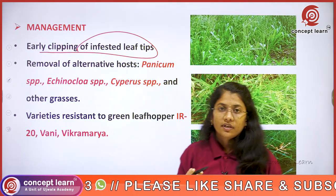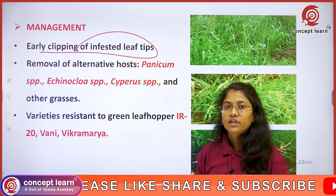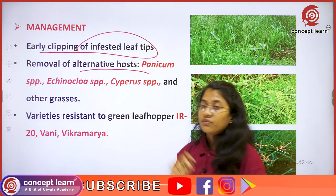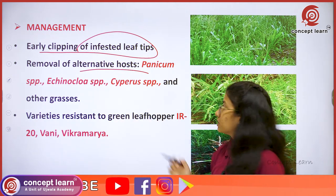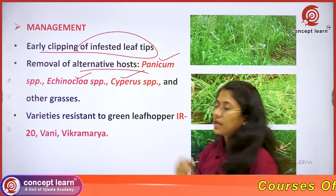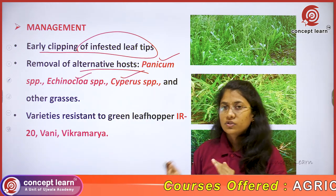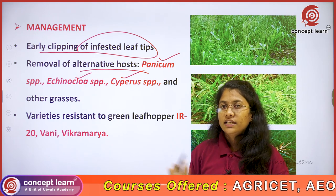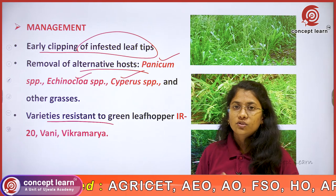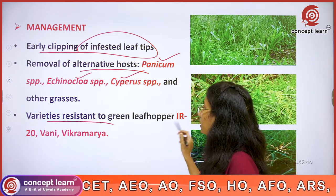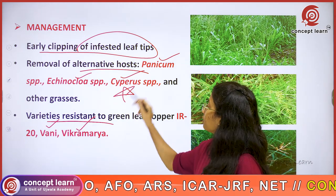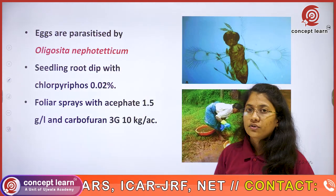For management: early clipping of infested leaf tips is recommended. Alternate hosts such as Panicum species, Echinochloa species, and Cyperus species must be removed within and outside the field. Resistant varieties to the rice green leafhopper include IR20, Vani, and Vikramarya.